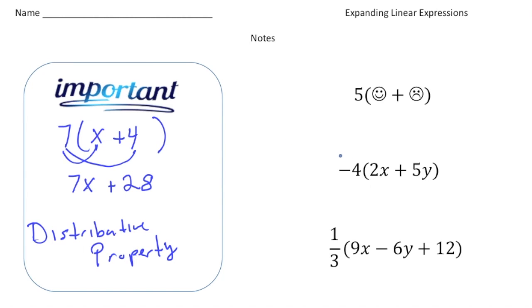So let's do 3 together. Here we have 5 groups of happy face plus sad face. So 5 times happy face is 5 happies, and then 5 times sad face is 5 sad faces.